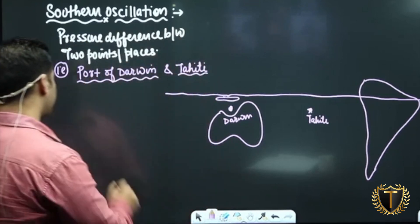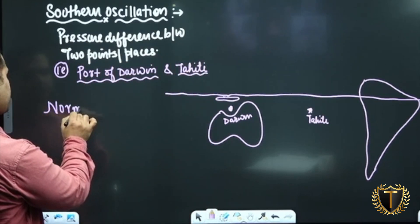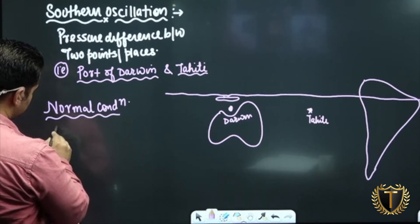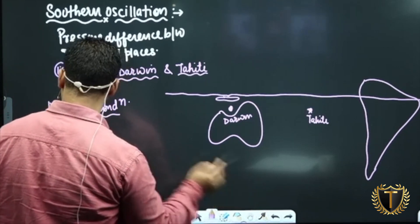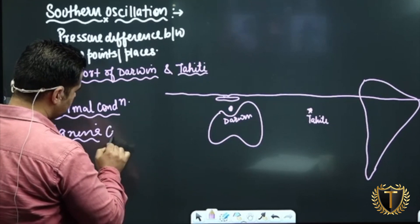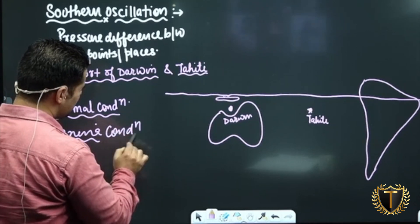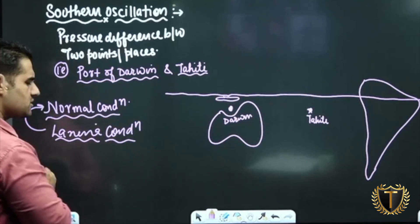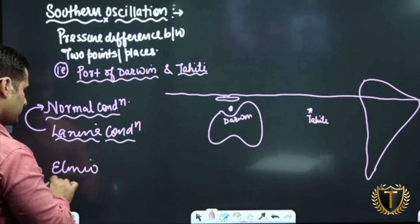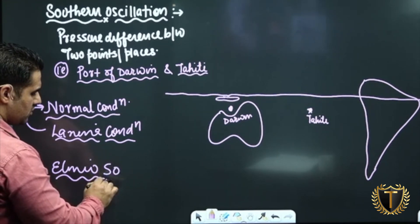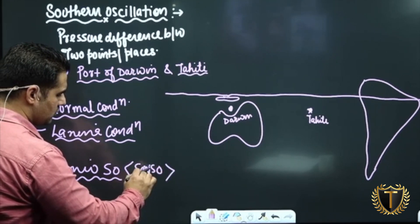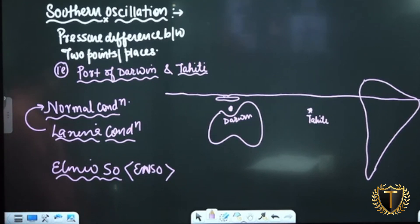Now we will discuss three conditions: normal condition, La Niña condition — which is the intensification of the normal condition — and then El Niño condition. Together, El Niño and Southern Oscillation are called ENSO.